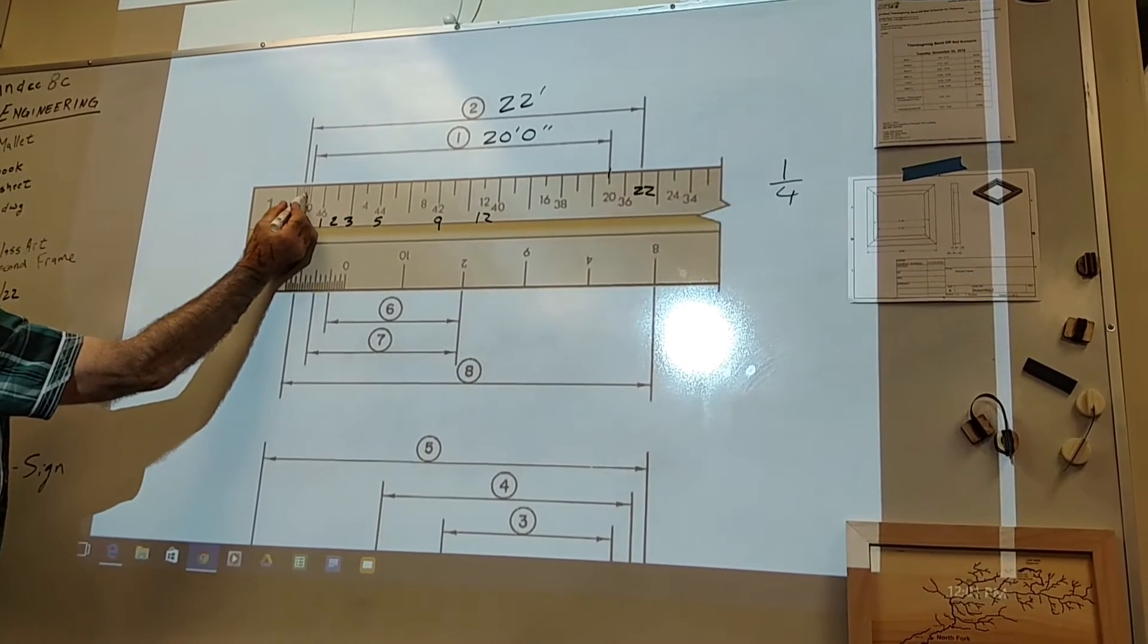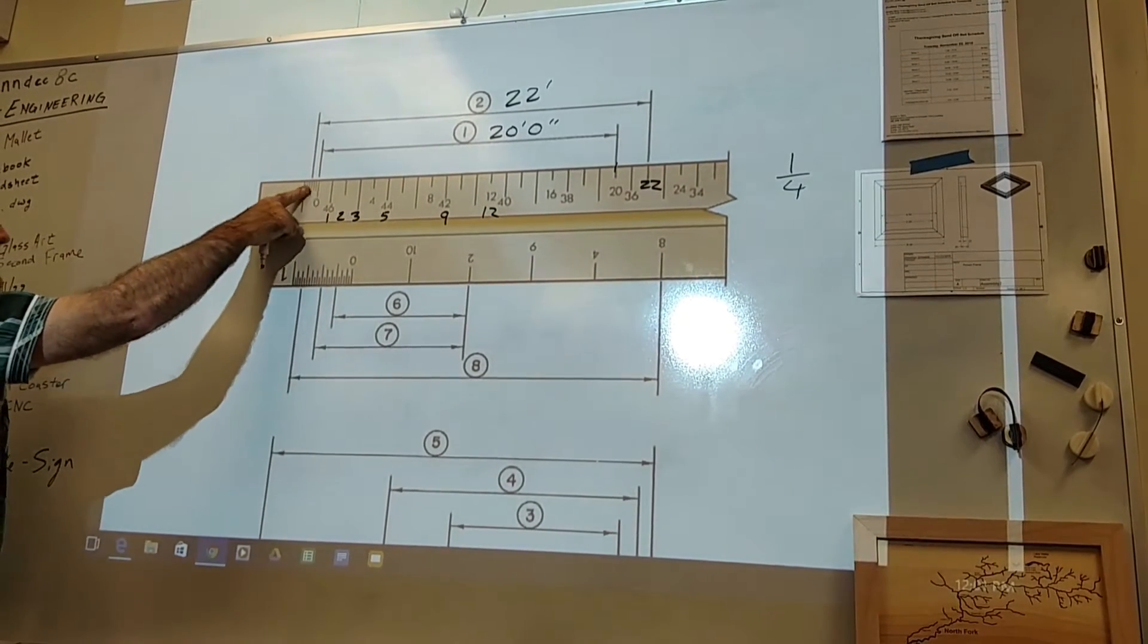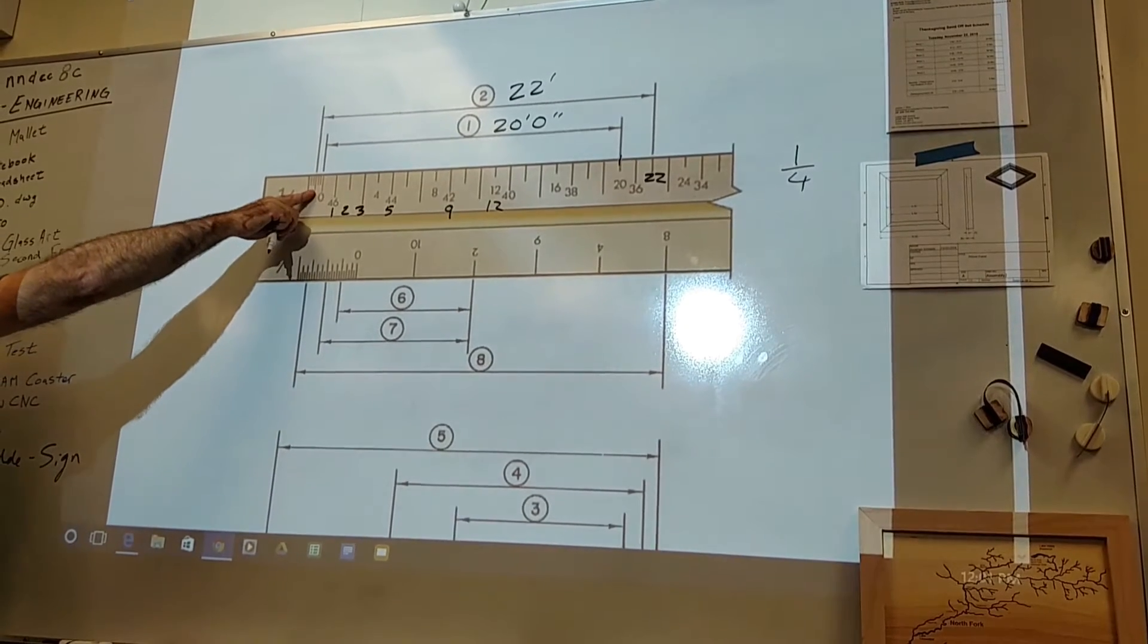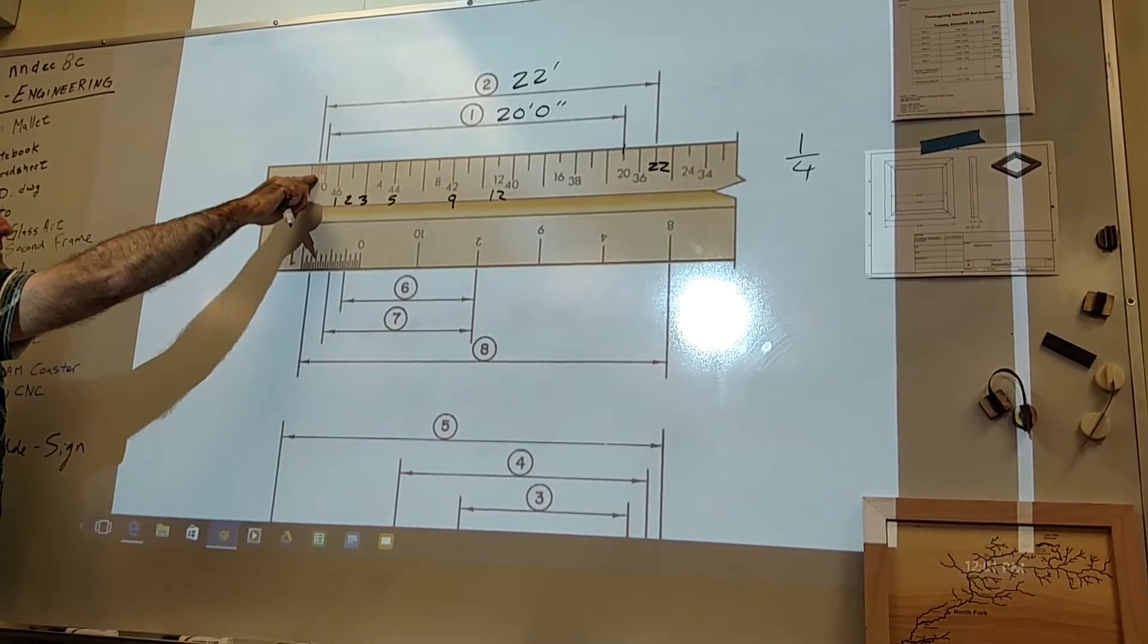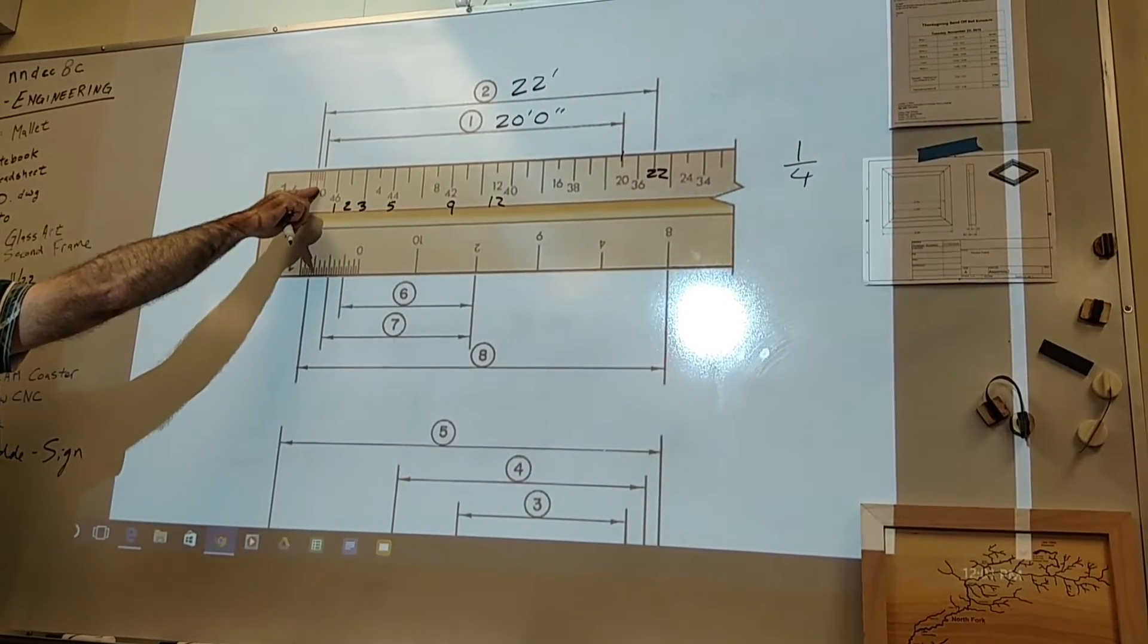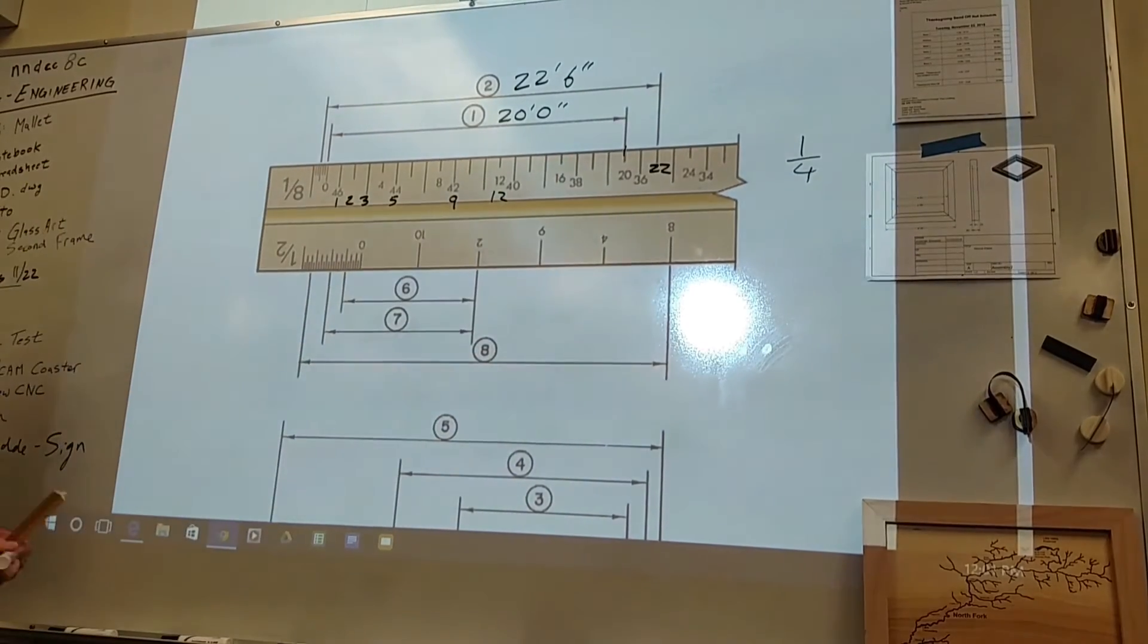There's a total of one, two, three, four, five, six little tick marks. Each tick mark has to be two inches, right? So two, four, six, eight, ten, twelve. So this is twenty-two feet, six inches.